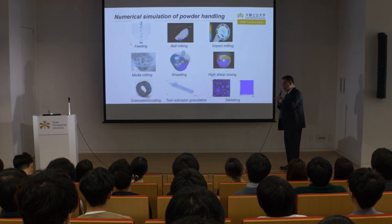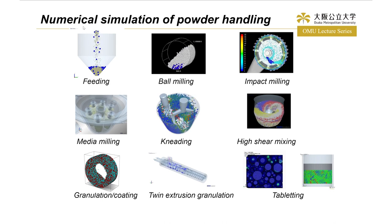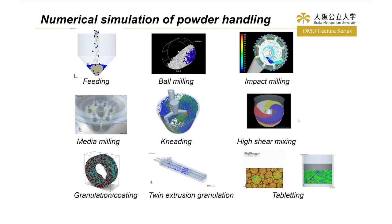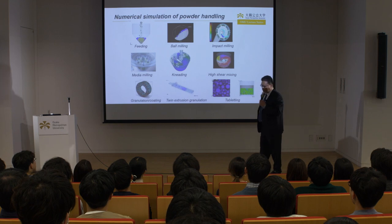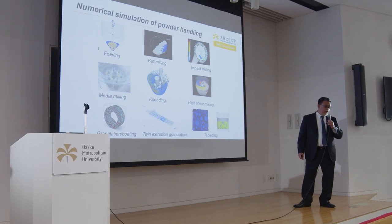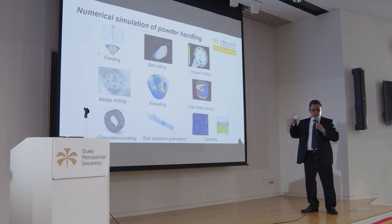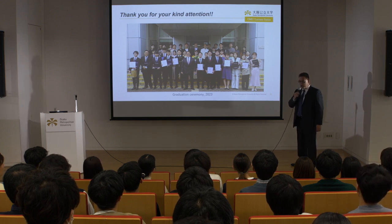Thanks to the rapid advance in computer science, we can now use computer simulation at will. Most powder processing can be simulated using numerical simulation methods, and I believe in the near future we can predict the product properties by feeding the powder properties and operation parameters of the processing. Due to time limitations, I just picked up one or two applications of powder processing. If I have an opportunity, I would like to talk to you again. Thank you very much for your kind attention.